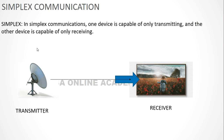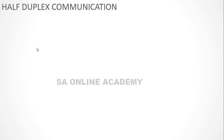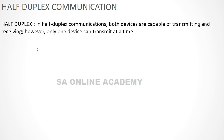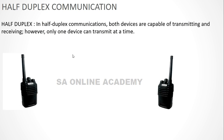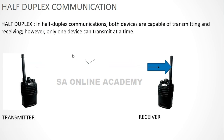All major RF communications are half duplex, including 802.11 communication standards. In half duplex, a device is capable of both transmitting and receiving, but both functions are not available at the same time. At any given point it can only transmit or receive. Both devices are capable of transmitting and receiving; however, only one device can transmit at a time. Walkie-talkie is the best example of half duplex communication.